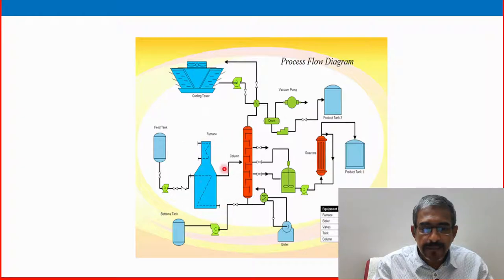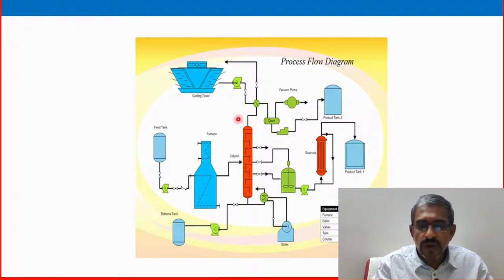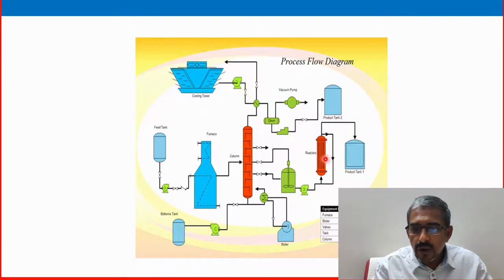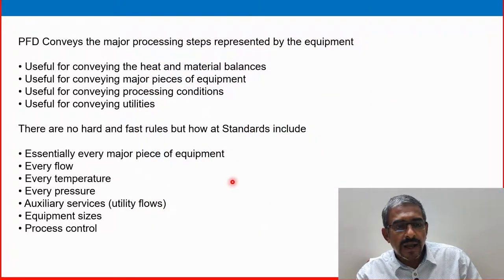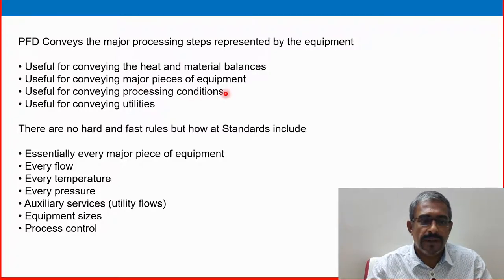See mainly all major equipments they are giving. The furnace is there, pump is there, feed tank is there, another pump is there, distillation column or any column, one of the column is there, another pump is there, heat exchanger is there, various reactor is there, another heat exchanger is there, various type of heat exchanger, another reactor is there, product tank is there, etc.